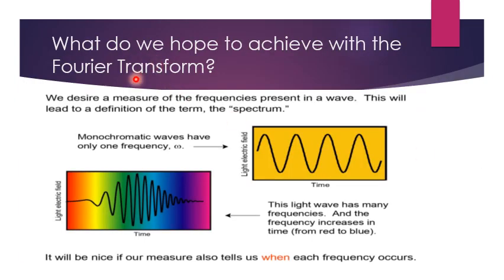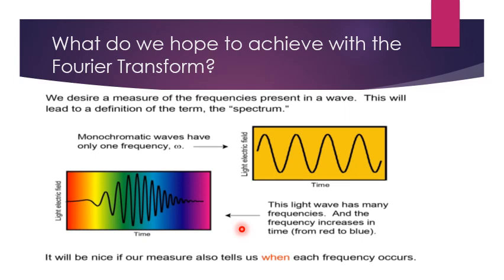What do we hope to achieve with the Fourier transform? We desire a measure of the frequencies present in a signal, which leads to the definition of the spectrum. A monochromatic wave has only one frequency, but a light wave has many frequencies ranging from red to blue. Fourier transform tells us when each frequency occurs.